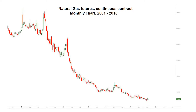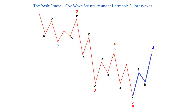This bearish trend lasted for 17 years, so let's see whether we can turn that into a framework with a reliable pattern to help us understand what we can expect from Natural Gas in coming weeks, months, and days. We have already discussed the basic five-wave fractal structure and the harmonic Elliott Waves in the case of a growing market — now we have a bear market in front of us.